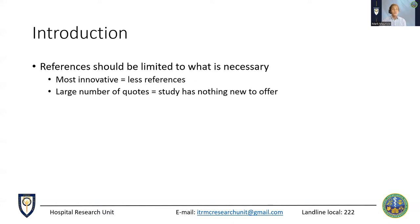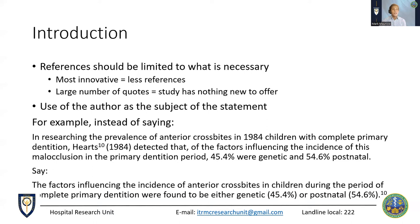The number of references should be limited to what is actually necessary. The most innovative studies tend to list few references, and an excessively large number of citations has a negative effect on qualified readers, as it suggests the study brings nothing new to the literature or that references were included without following any criterion. When using references, we should avoid using the names of authors in the text or as the subject of sentences. Older manuscripts used to mention numerous author names, but today, what matters is the level of evidence provided by the source. Two examples illustrate this: in the first, the author is the main element of the sentence; in the second, the information itself gains prominence.